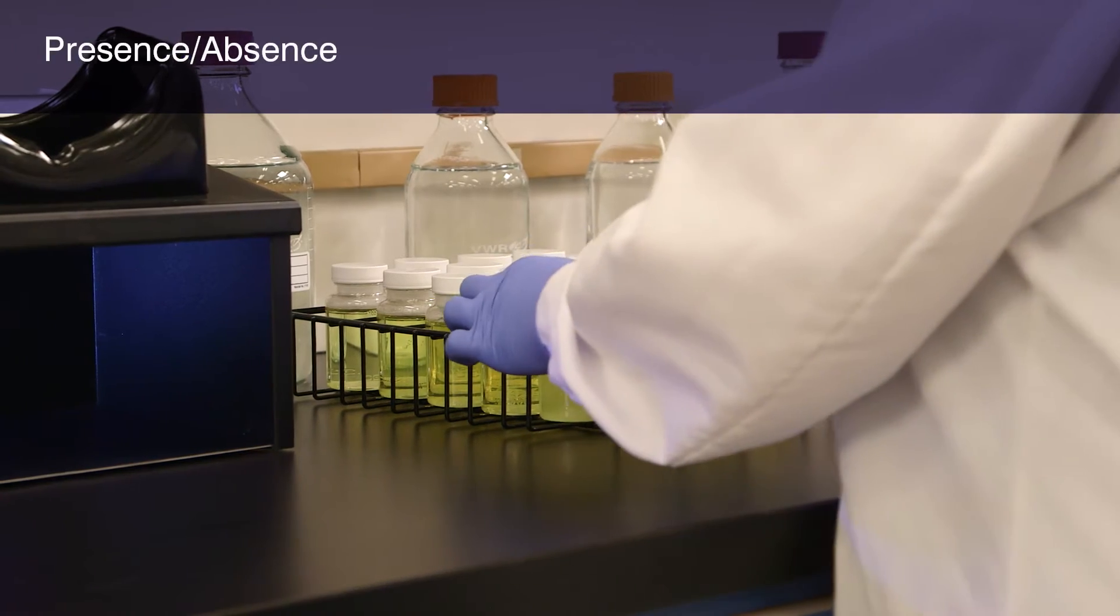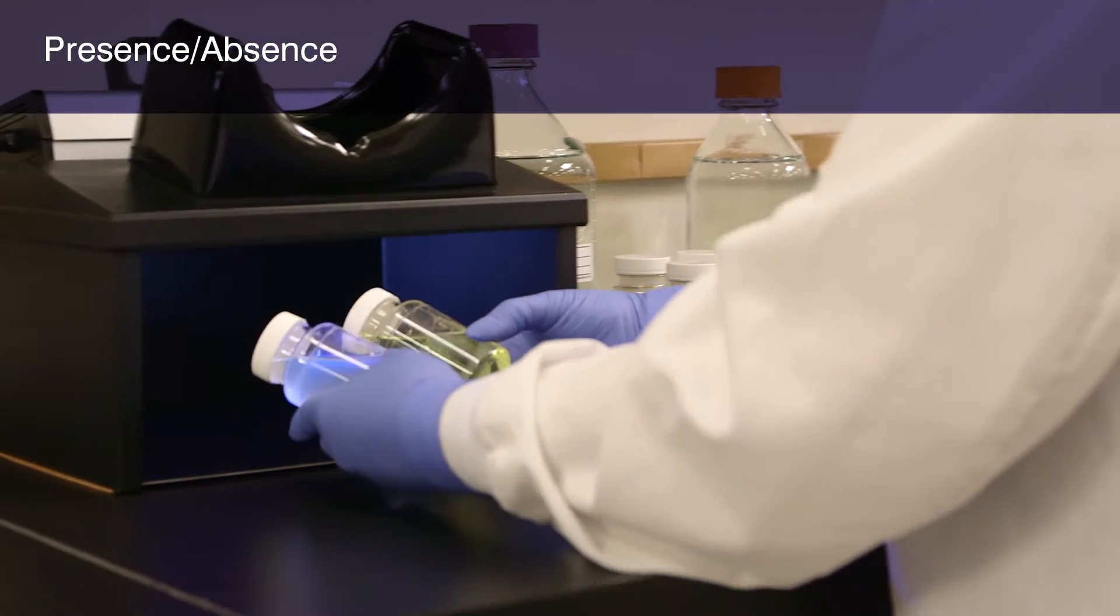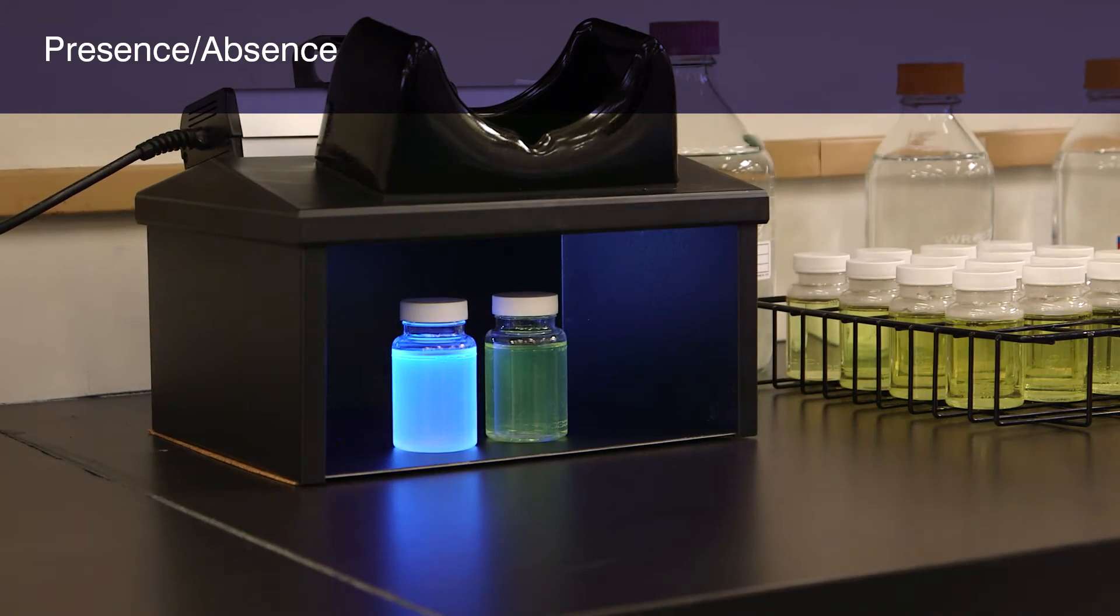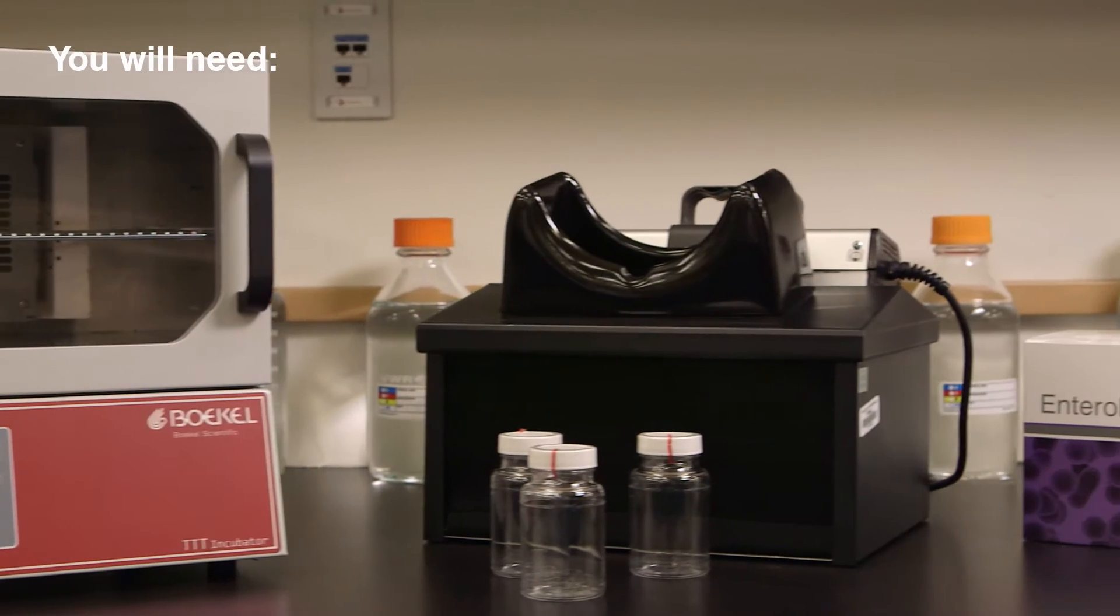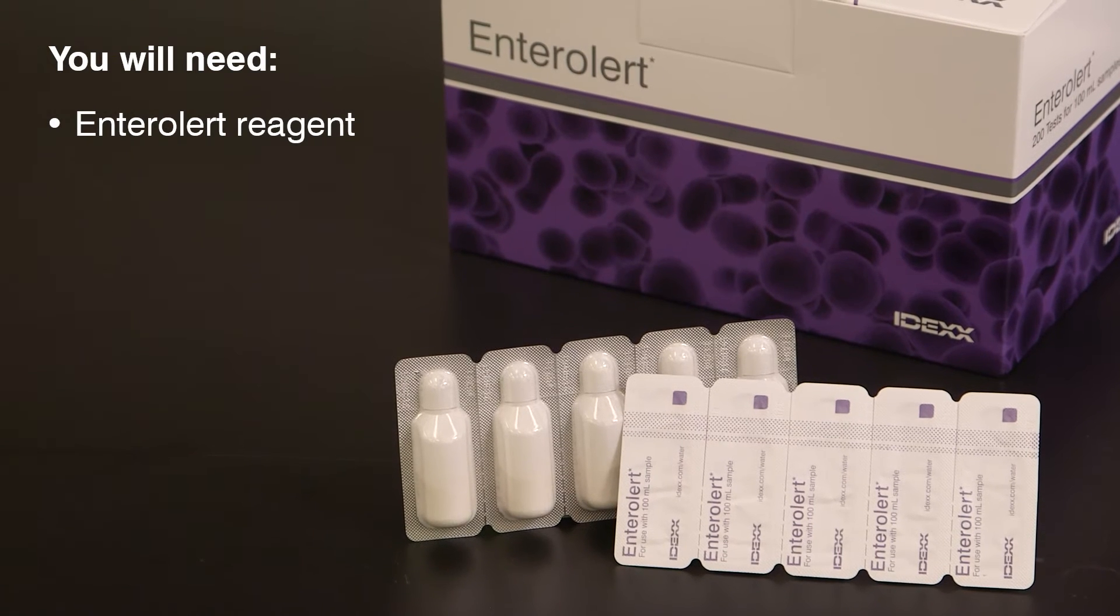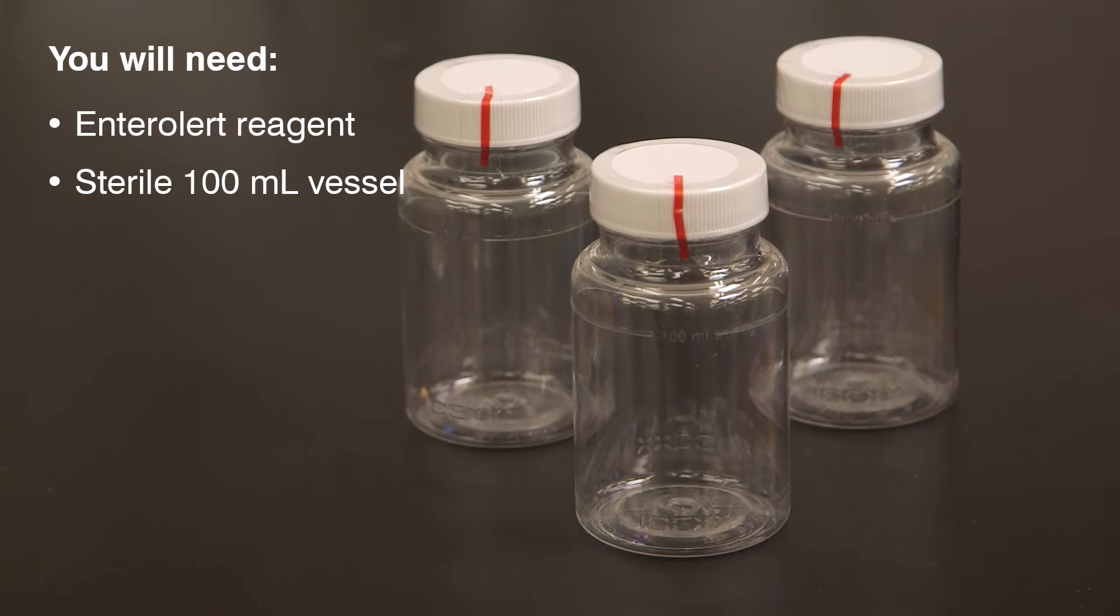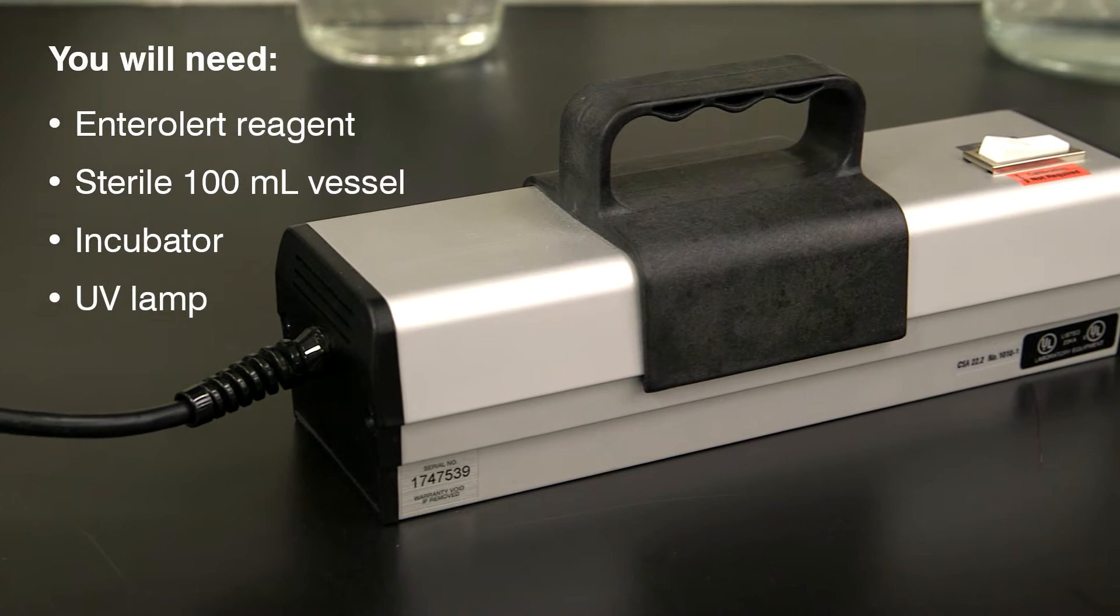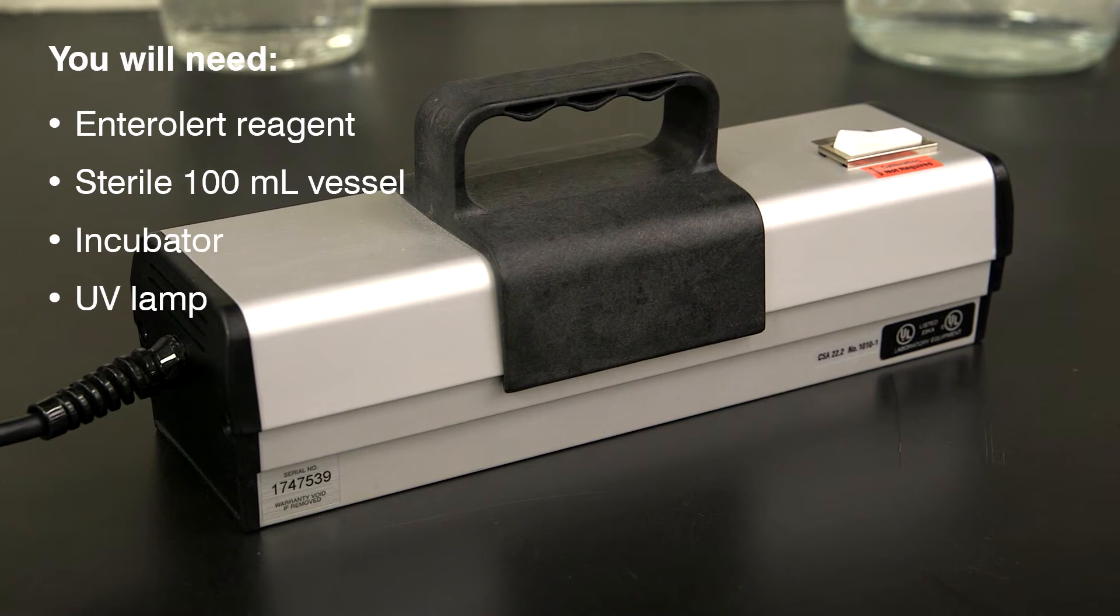In the first demonstration, you will learn how to use the Enteralert test for presence-absence detection of enterococci. You will need the Enteralert reagent, a sterile, transparent, non-fluorescent 100 ml vessel, a temperature-controlled incubator, and a 6-watt, 365-nanometer UV lamp.